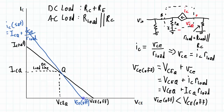And that VCE off point is going to be equal to the DC collector emitter voltage operating point plus the DC collector current times R load. So it's this value here which is going to indicate my maximum peak, and then two times that is going to be my maximum peak-to-peak voltage I can have without clipping.